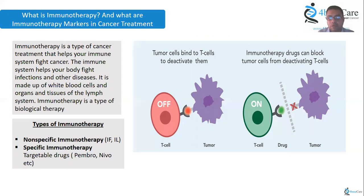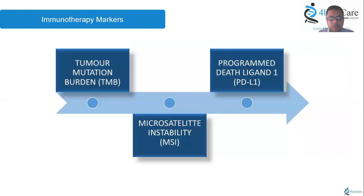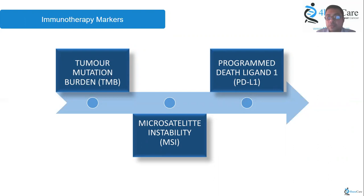Specific immunotherapy includes drugs like pembrolizumab and nivolumab. There are mainly three kinds of immunotherapy markers approved for cancer treatment: first is Tumor Mutation Burden or TMB, next is Microsatellite Instability or MSI, and the last one is Programmed Death Ligand 1 or PDL1.